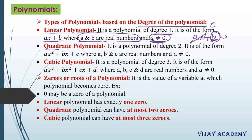Similarly, any polynomial whose degree is 2 is called a quadratic polynomial. The standard form is ax square plus bx plus c, where a, b, and c are real numbers and a cannot be 0. If a becomes 0, the first term becomes 0 and we are left with bx plus c, whose highest power is 1 — making it a linear polynomial, not a quadratic polynomial.